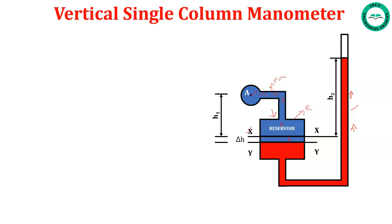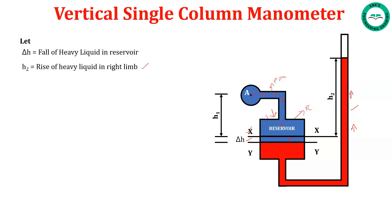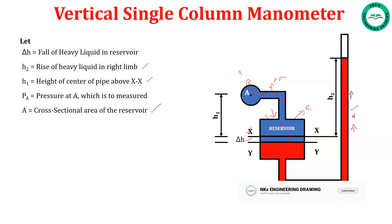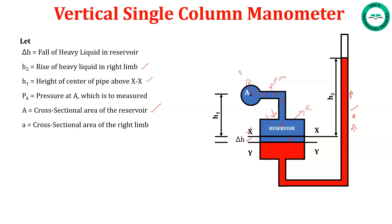Now let us define the terms. Let delta h be the fall of heavy liquid in the reservoir when it is connected to a pipe. H2 is the rise of heavy liquid in the right limb. H1 is the height of the center of the pipe above XX. PA is the pressure to be measured. Capital A is the cross-sectional area of the reservoir and small a is the cross-sectional area of the right limb.